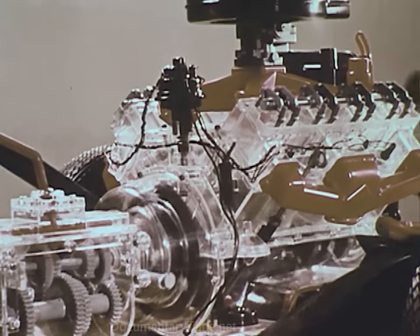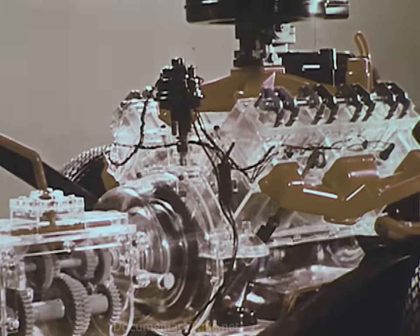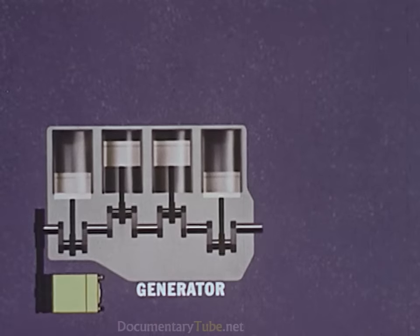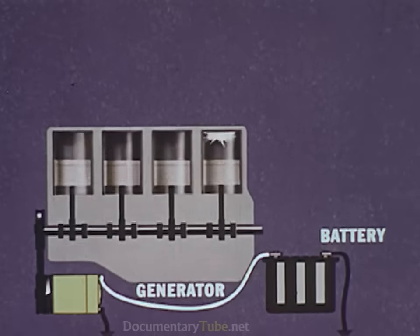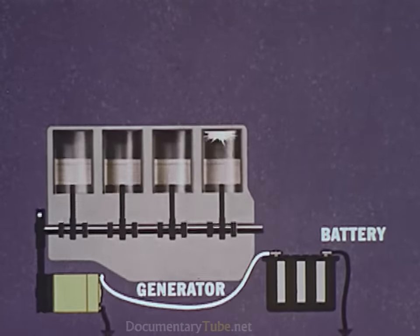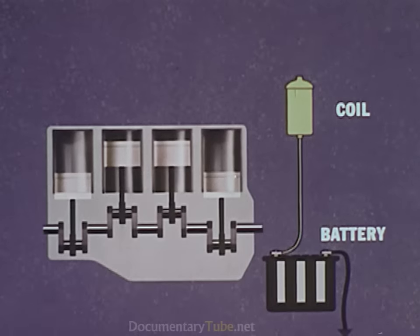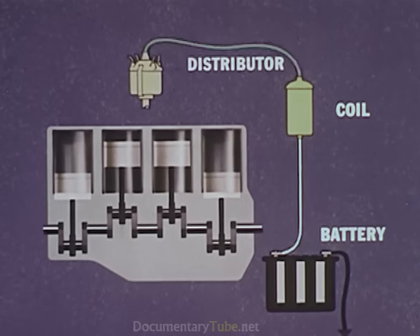The engine's electrical system supplies the spark that fires the fuel mixture. As the engine rotates, it drives a generator which keeps the car's battery charged. The battery supplies electricity to the coil, which boosts the current to a voltage high enough to produce a spark.